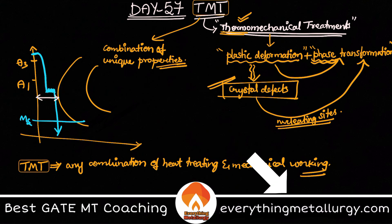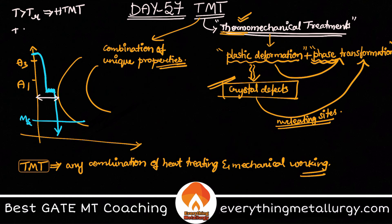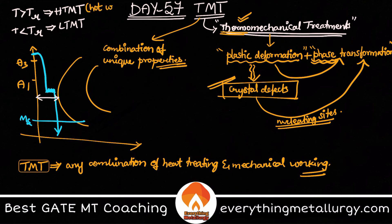Based on this, if temperature is greater than TR, we call it HTMT — high temperature TMT — whereas if T is less than TR, we call it LTMT — low temperature TMT. Best examples are hot working or hot rolling for HTMT, and cold working for LTMT. We know the various advantages and disadvantages of cold working and hot working.